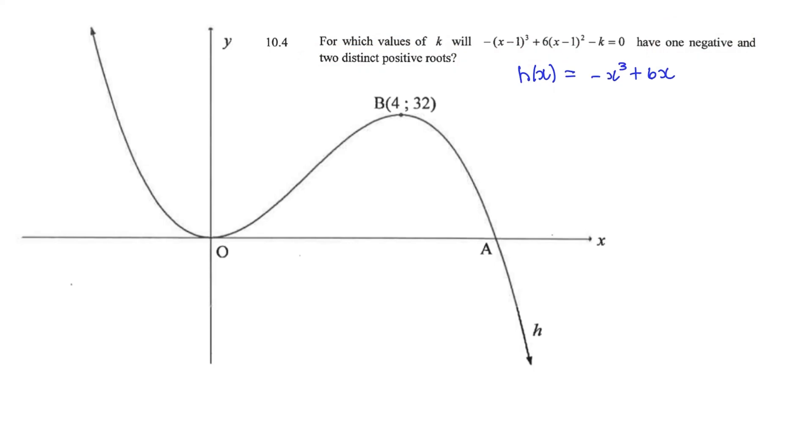Now what we want to do is find a value for k for where this function would have one negative and two distinct positive roots. First, you'd need to understand that you're given h(x) as negative x cubed plus 6x. And we want to see the impact of this movement. And in function theory, when x minus 1 is in brackets, that means we're moving to the right by one unit. So this original function is shifted by one unit. So this B-coordinate now would be at (5, 32).